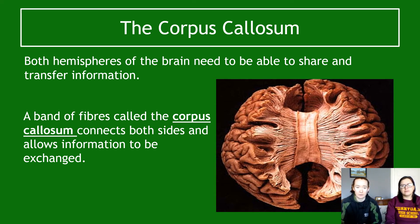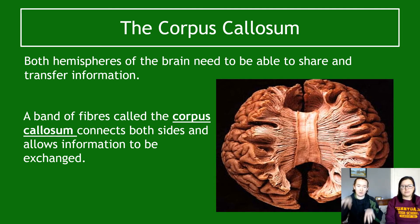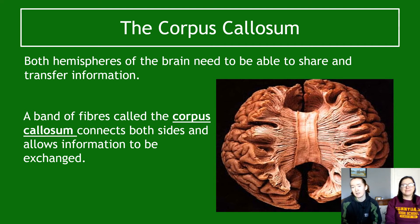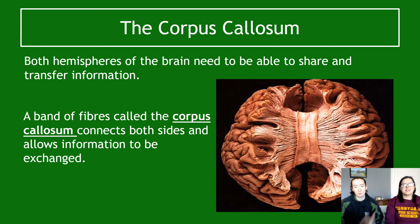The structure that connects both hemispheres is called the corpus callosum - it's a band of fibers. If you spread the brain out and look in the middle, the part joining them together is the corpus callosum. That's what allows information to pass from side to side so both hemispheres know what's happening. Please don't confuse this with the corpus luteum - unfortunately many of these words sound similar.